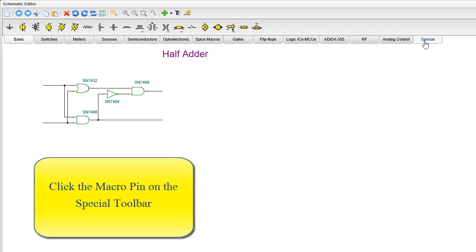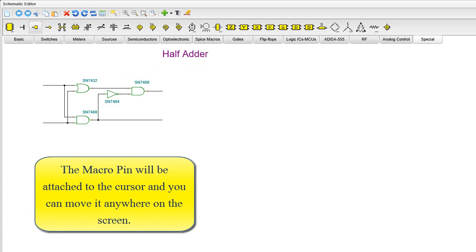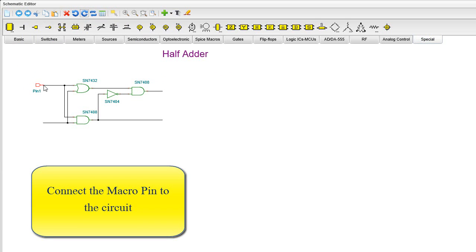Click the macro pin on the special toolbar. The macro pin will be attached to the cursor and you can move it anywhere on the screen. You can rotate the pin using the Rotate Left or Rotate Right buttons. Connect the macro pin to the circuit.